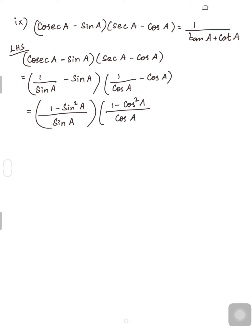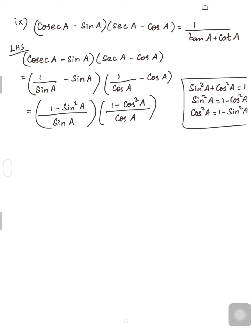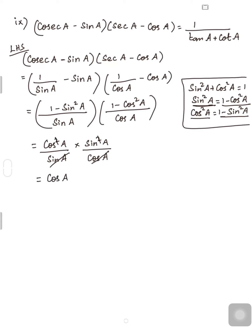Similarly for the second term, the LCM is cosA, giving (1 - cos²A)/cosA. You know sin²A + cos²A = 1, so 1 - cos²A = sin²A and 1 - sin²A = cos²A. So replacing: the first term becomes cos²A/sinA and the second becomes sin²A/cosA. Multiplying: (cos²A/sinA)(sin²A/cosA). One sinA and one cosA cancel, leaving cosA·sinA.